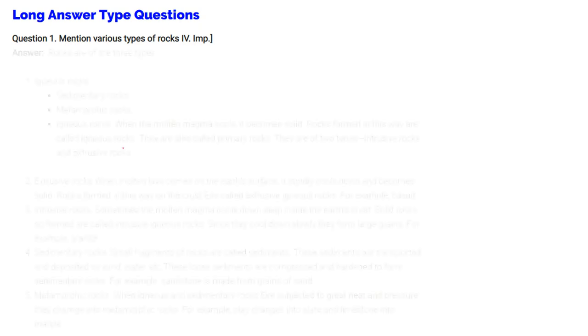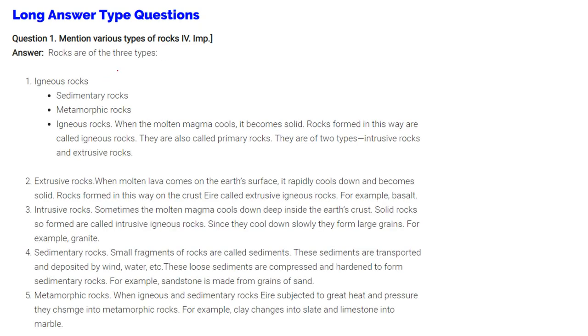Mention various types of rocks. So there are mainly three types of rocks: igneous rocks, and we have various subcategories also, but igneous rock and sedimentary rock and metamorphic rock, these are the three main categories.